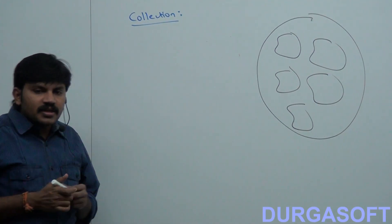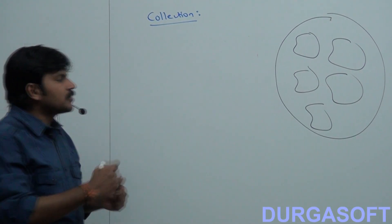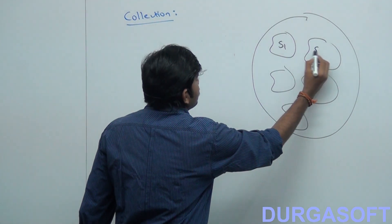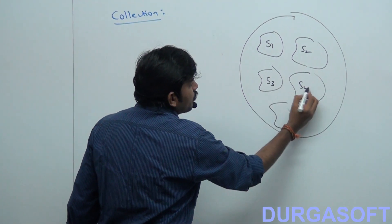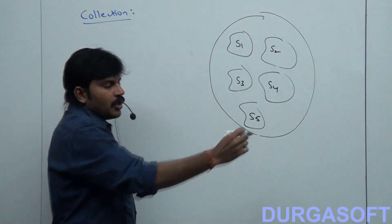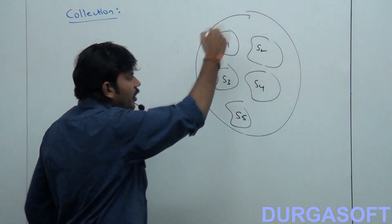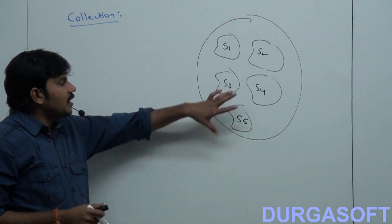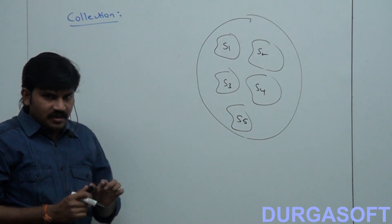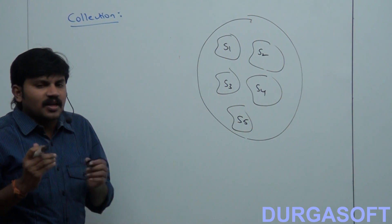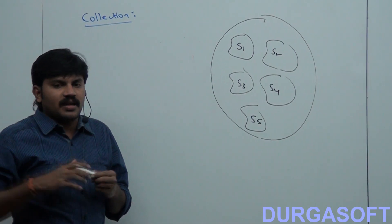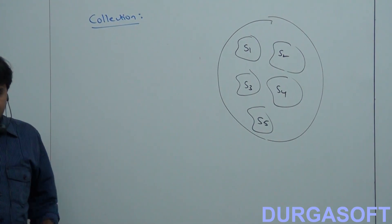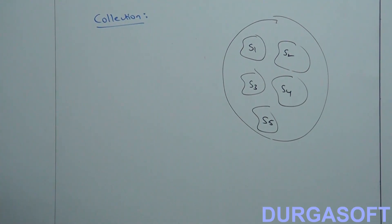So collection is a group of individual objects. Suppose we have first student object, second student object, third student object, fourth student object — I want to represent these student objects as a single entity, then we should go for collection. In normal terminology, collection is a group of individual objects.